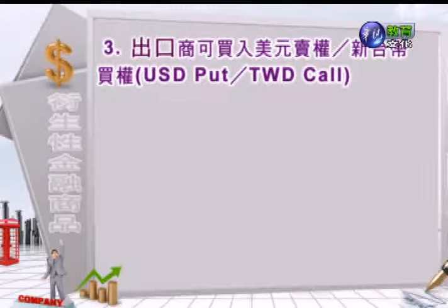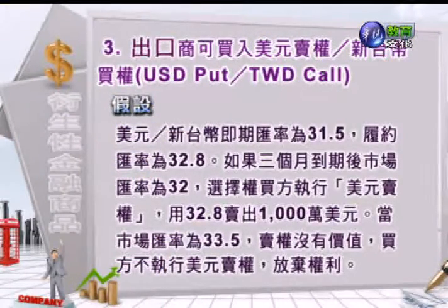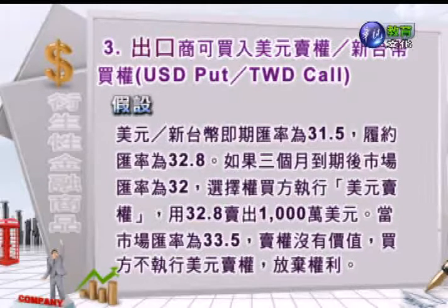第三个，出口商可以买入美元的卖权（台币的买权）。同样的，我们假设某个出口商未来三个月后可以收到1000万美元的货款，它因为担心美元会贬值，所以它就预先跟银行买入三个月期的美元卖权（台币买权）。假设美元对台币的履约汇率是32.8，如果三个月后到期时市场的汇率是32，选择权的买方就会执行美元的卖权，用32.8卖出1000万美元；假如市场的汇率是33.5的话，这个卖权是价外的没有价值，所以买方就不执行美元的卖权，放弃权利。今天我们跟各位介绍了利率跟外汇选择权，同学要多加研读，因时间的关系我们介绍到此，谢谢收看，下次再会。